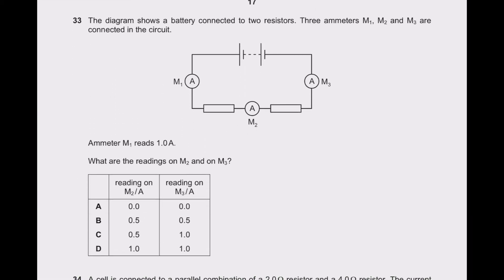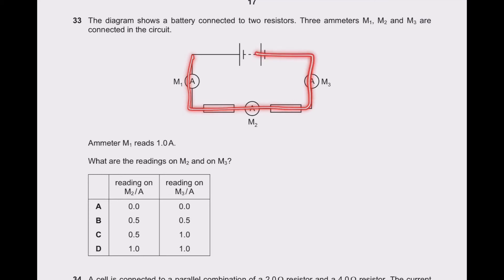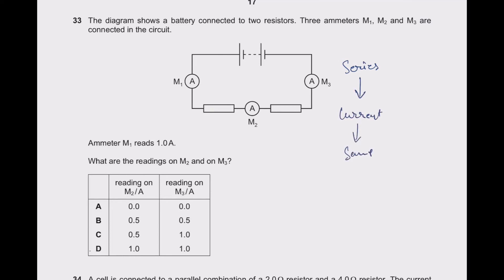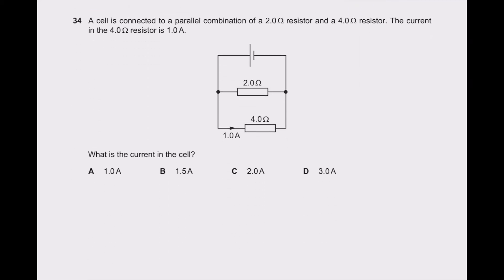Question 33: a battery is connected to two resistors; three ammeters M1, M2, M3 are connected. M1 reads 1 ampere. Since all are in series, current remains the same throughout. All ammeters read 1 ampere. Option D is the right answer.